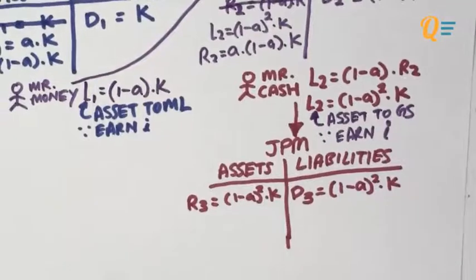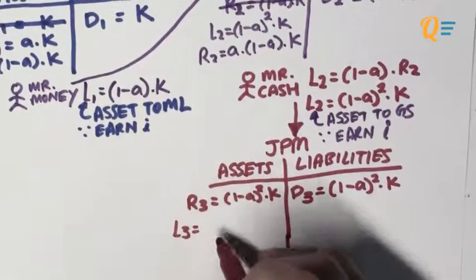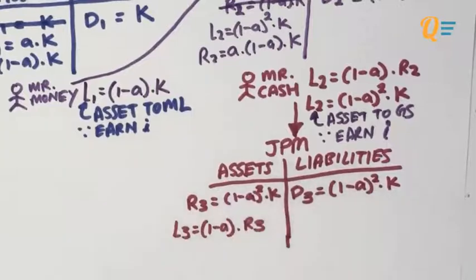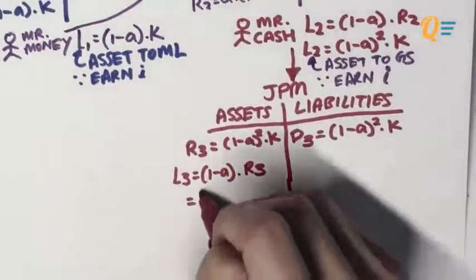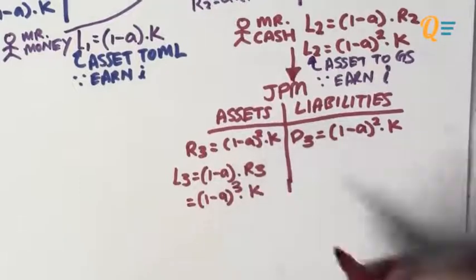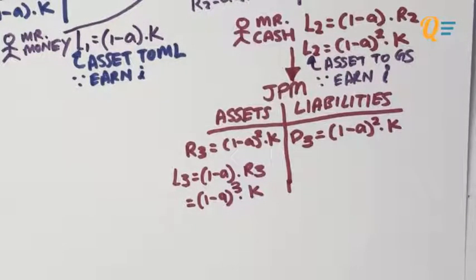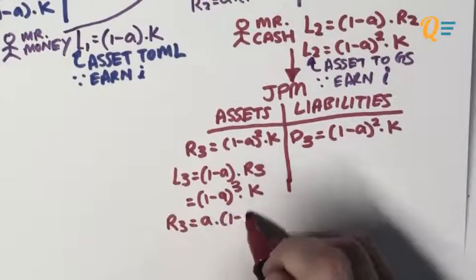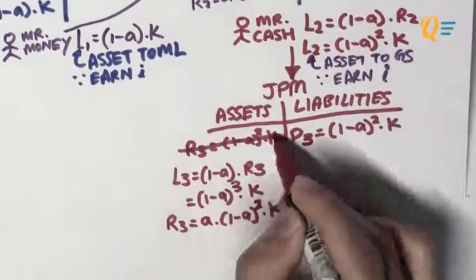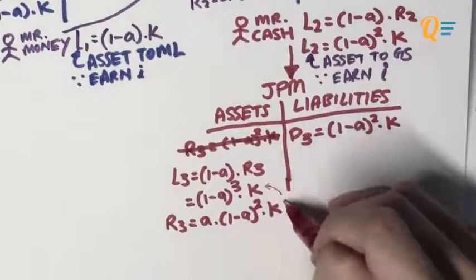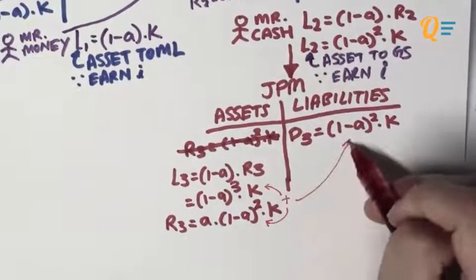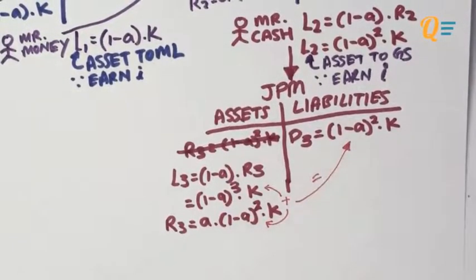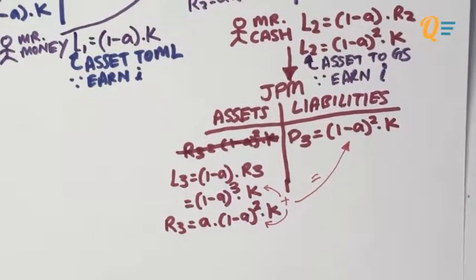JP Morgan can make a third loan of (1 − α) × R3, so L3 = (1 − α)³ × K. After lending, JP Morgan's remaining reserve R3 = α × (1 − α)³ × K. Adding L3 and R3 together gives D3, so JP Morgan's balance sheet is cleared as well.